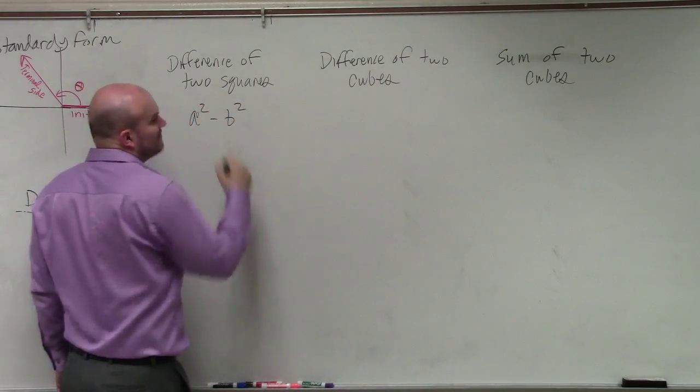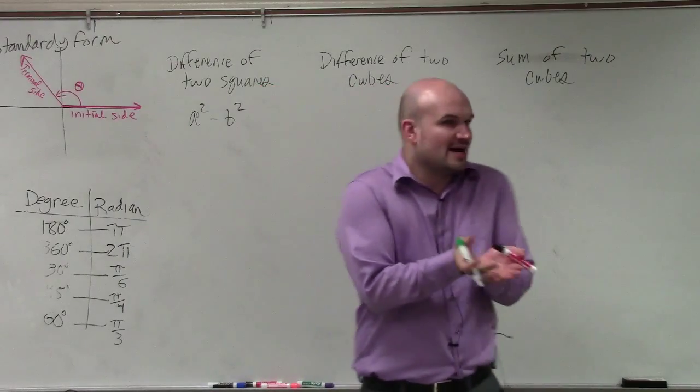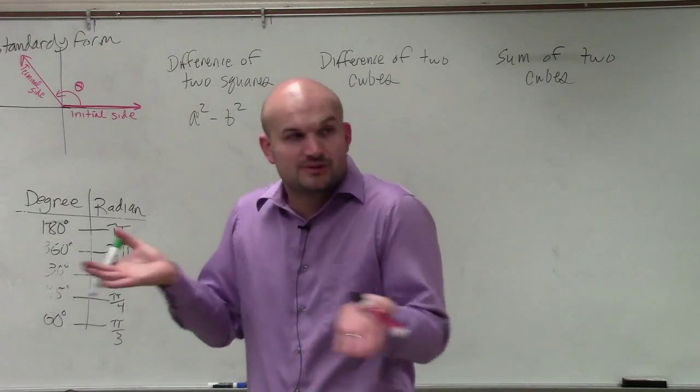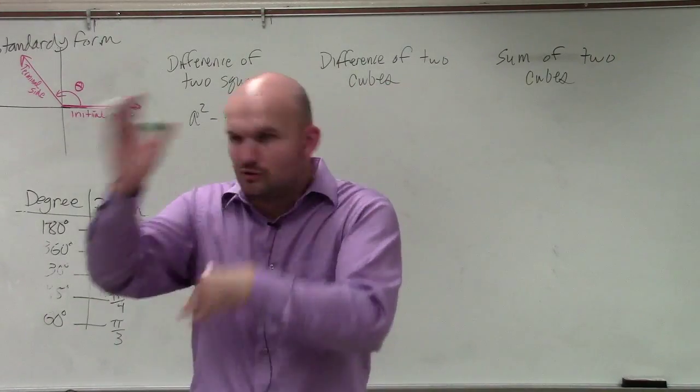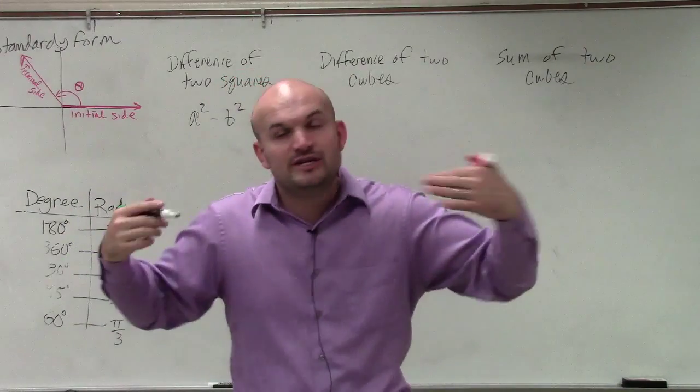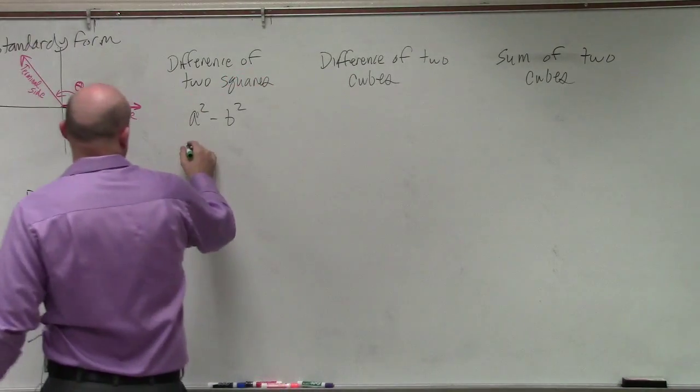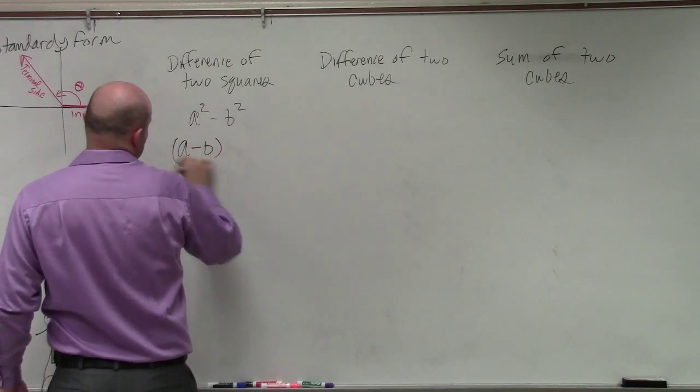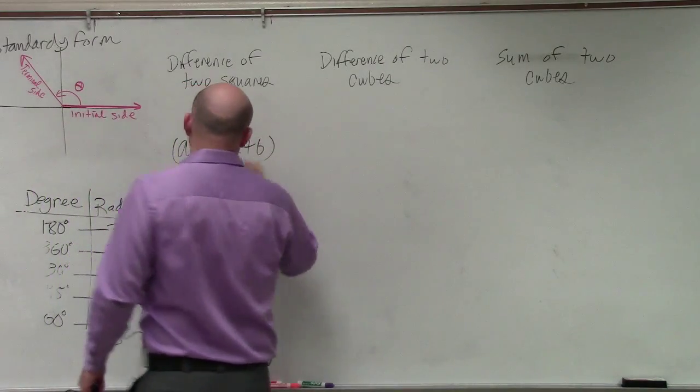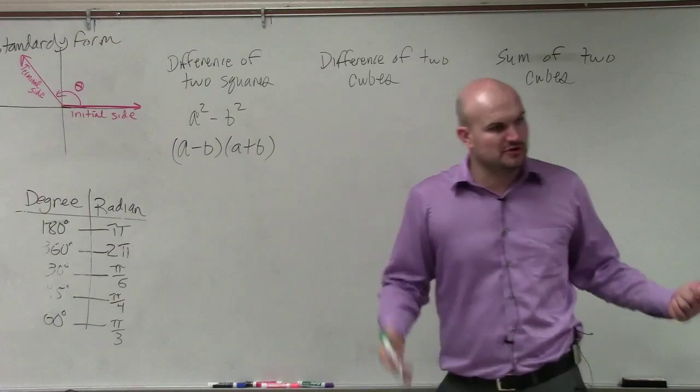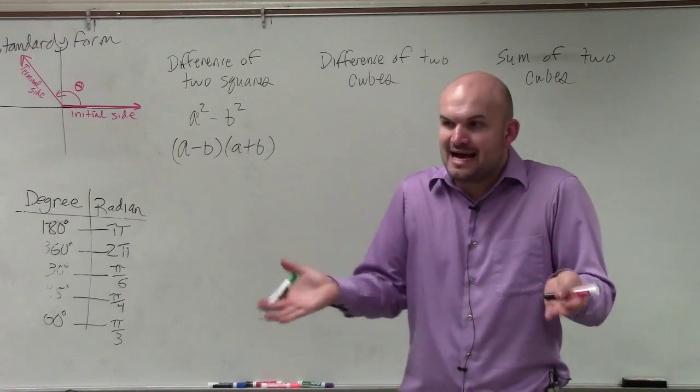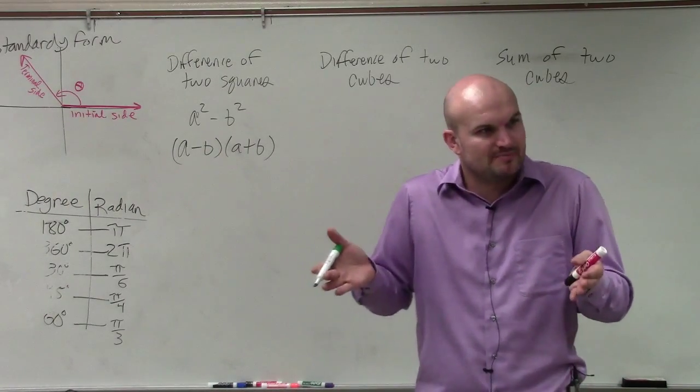And that was what we called a special factoring technique. And whenever I asked you guys to look at square numbers minus square numbers, rather than doing the whole diamond and box thing that we practice with factoring, when you have a difference of two squares, we can factor that into (a-b) times (a+b). And that was really important for you guys to be able to understand. You can break it down into (a-b) times (a+b).